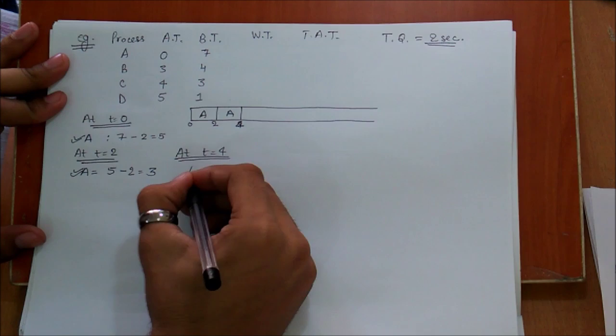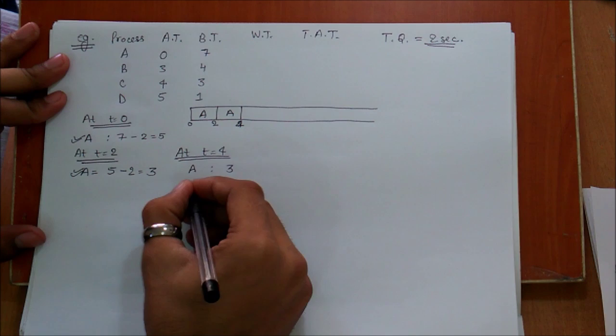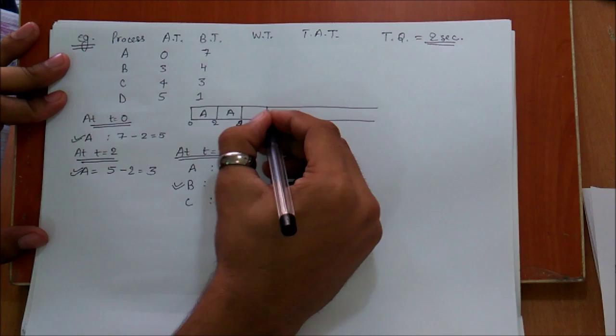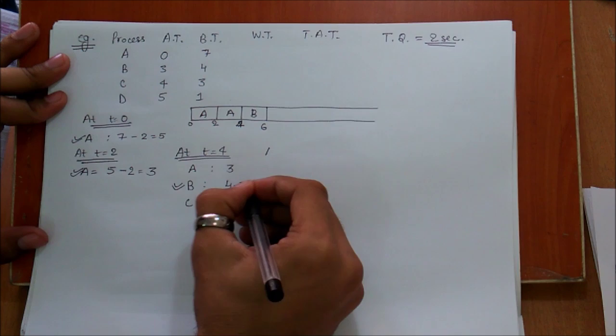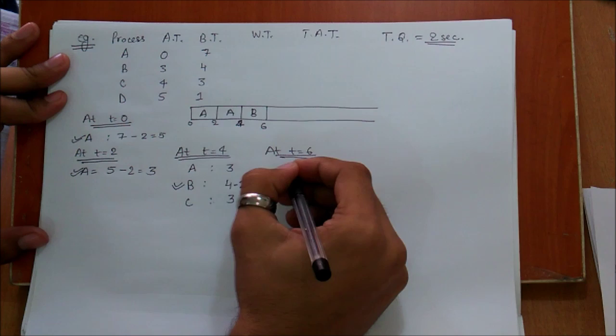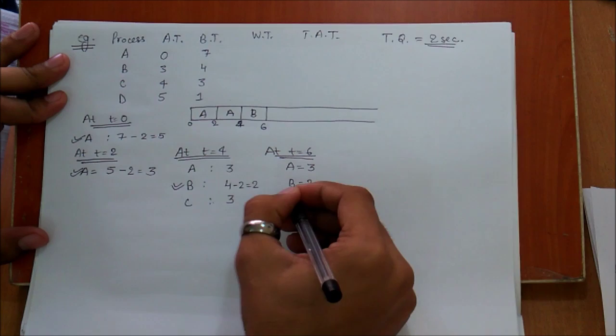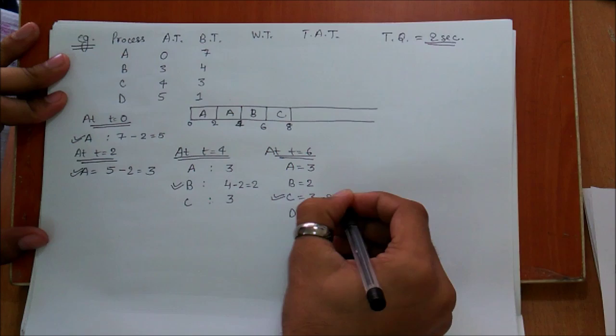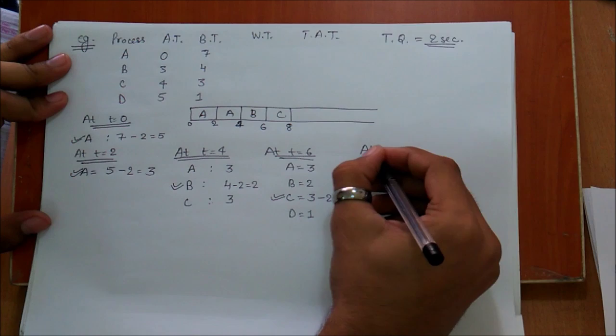Now at t=4, we have A with remaining burst time 3. We also have B with burst time 4 and C with burst time 3. We move to the next item in the queue, which is B, and execute it for 2 seconds, so it goes till t=6. At t=6, we have A=3, B=2, C=3. We then execute C for 2 seconds, so the remaining burst time of C becomes 1.